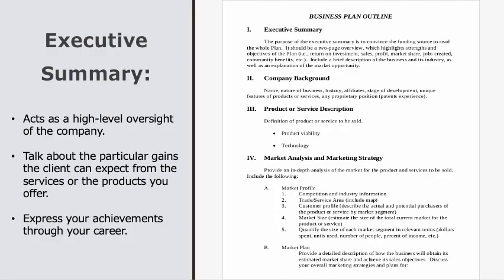After the table of contents comes the executive summary, which is a high-level oversight of the company. The executive summary is a chance to talk about your business and the particular gains the client can expect from your services or products. You can also go into some of your achievements throughout your business career. Overall it's a summary of your business to help convince the client that you provide the best solutions to their problems.